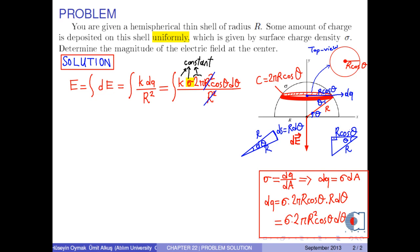So, we obtain 2 pi times k times sigma times integral cosine theta d theta. The limits of the integral is 0 and 90 degrees.